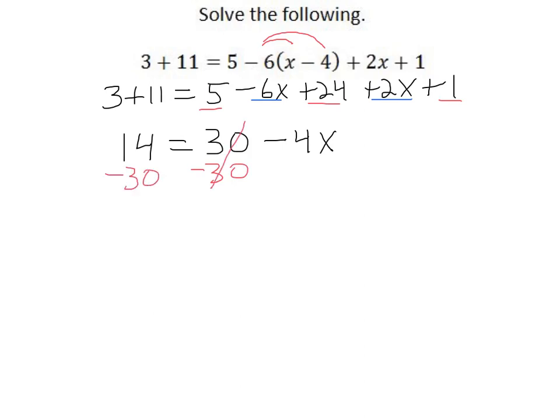So allowing me to get 30 minus 30 is 0. So 14 minus 30 is negative 16 equals negative 4x.